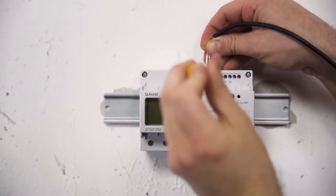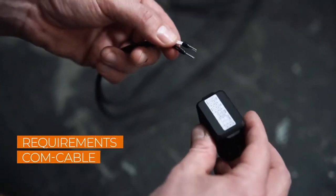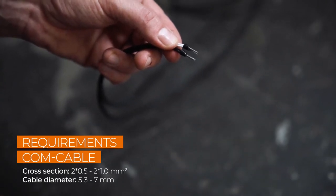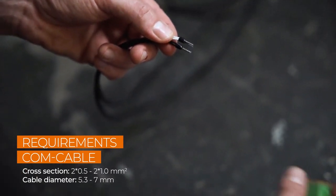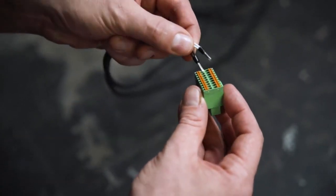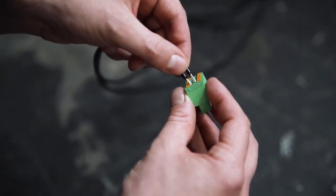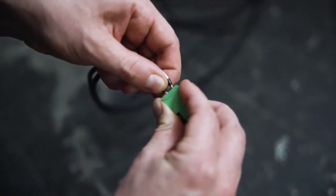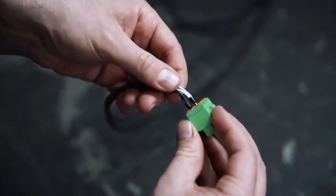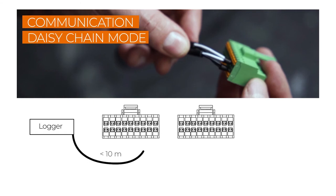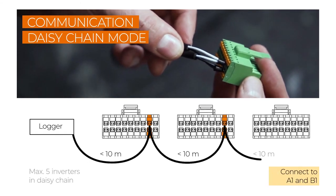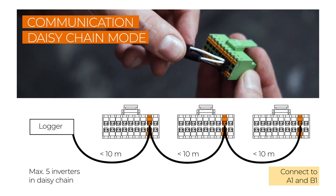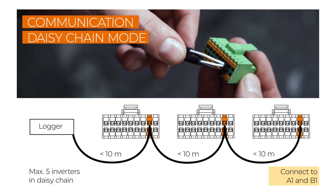Now let's jump back to the communication port. A maximum number of 5 inverters can be connected in daisy chain mode. If necessary, you may have to fit the cables with end sleeves before you push them into the plug. Connect the cables to the ports A1 and B1 at the RS485 interface of the inverter. The first inverter in daisy chain mode can be connected to the RS485 port of the logger. The cable between two inverters should be no more than 10 meters. When daisy chain mode is being used, the Ynet S can't be used as communication device.